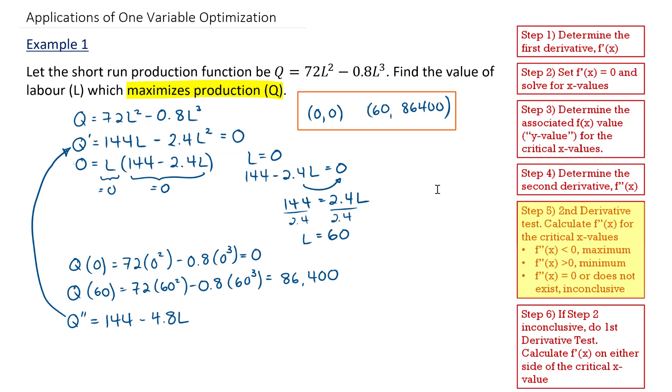Next, I do my second derivative test by calculating the second derivative for our critical L values. So our L value of 0 will be my first critical value. Q double prime when L is equal to 0, I'm going to get 144 minus 4.8 times 0. That's going to give me 144.